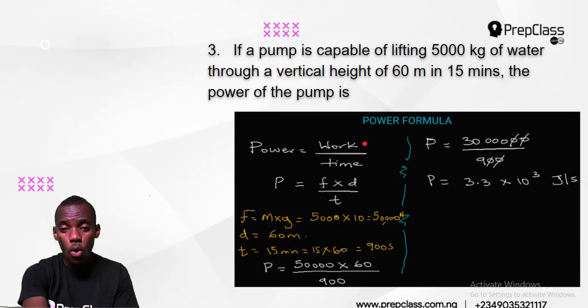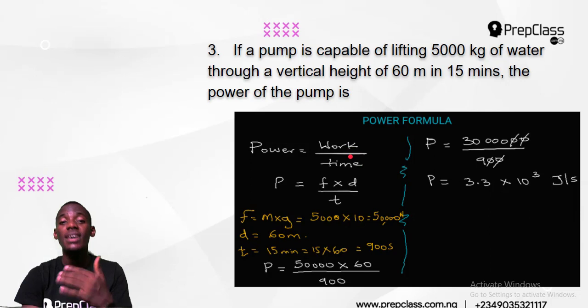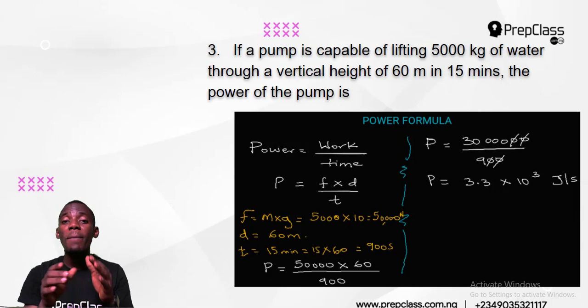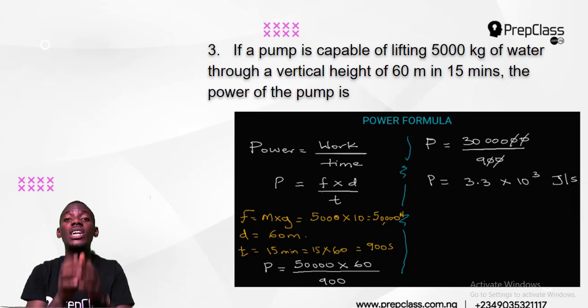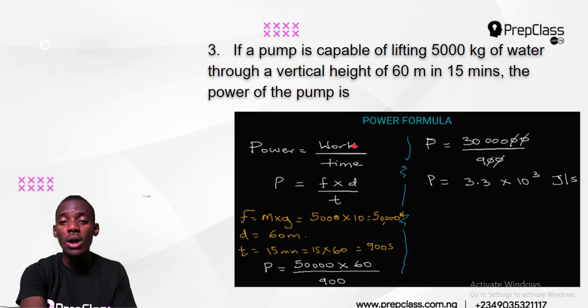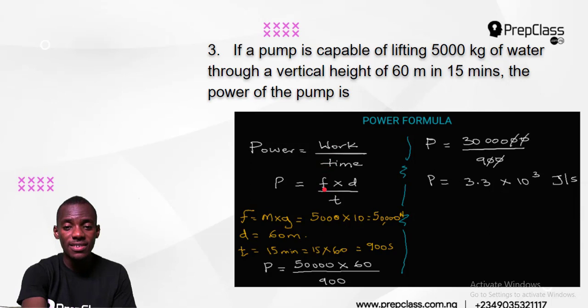A powerful man spends little time doing large work — that's what the power formula says: work divided by time. Work itself is force times distance, so power is force times distance over time. In the question we were given 5,000 kilograms of water, and the height is 60 meters in 15 minutes.